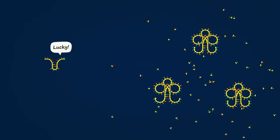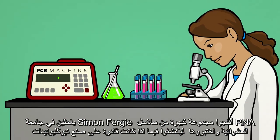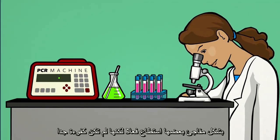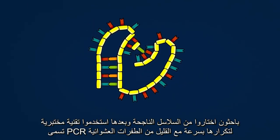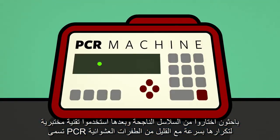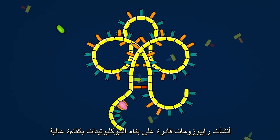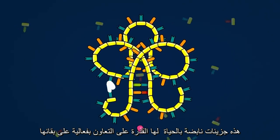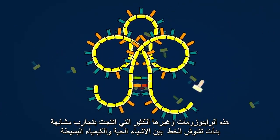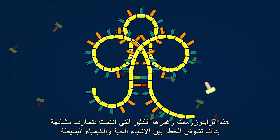To explore this idea, researchers at Simon Fraser University produced a large group of random RNA chains and examined them to see if any happened to be able to make nucleotides. Surprisingly, some actually could, but they weren't very efficient. Researchers selected out the successful chains and then used a lab technique called PCR to quickly replicate them with slight, random mutations. After just 10 rounds of PCR followed by selection, highly efficient nucleotide-building ribozymes evolved. These are molecules with a lifelike ability to actively participate in their own survival. These ribozymes, and many others produced through similar experiments, are beginning to blur the line between living things and simple chemistry.